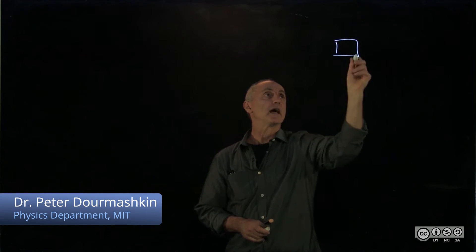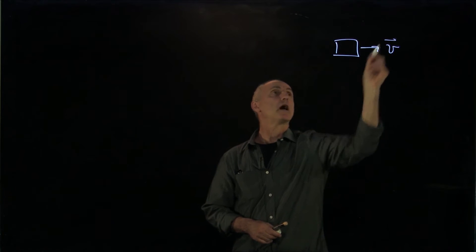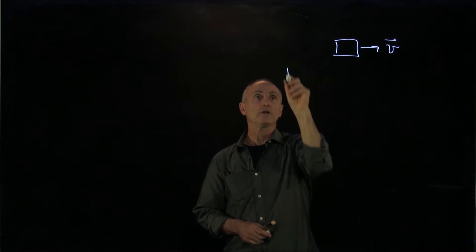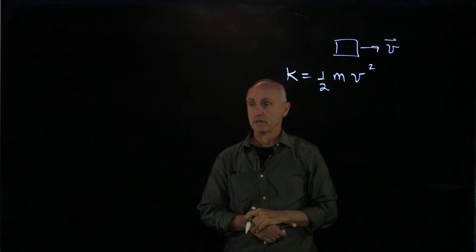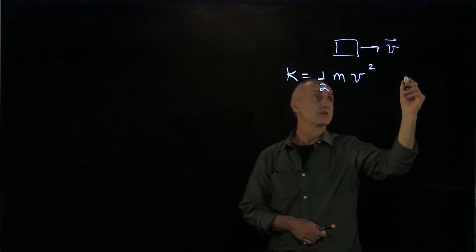So let's talk about kinetic energy again. Remember, when we have an object moving with speed v, we define the kinetic energy of the object as a scalar quantity, 1/2 mv squared. This is scalar.